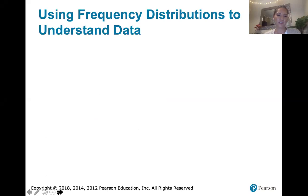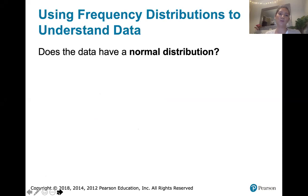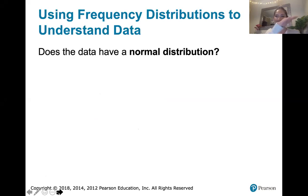One thing we might be interested in is whether data come from a normal distribution. A normal distribution has that bell shape you've probably seen many times before outside of statistics. It starts low, then it's high, and then it's low again, and it has symmetry.